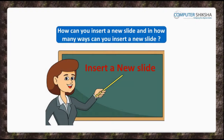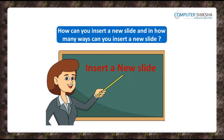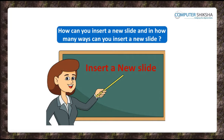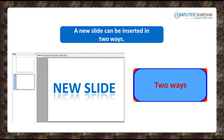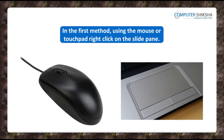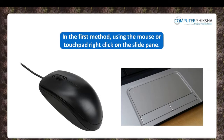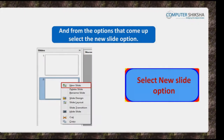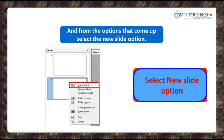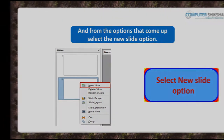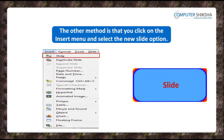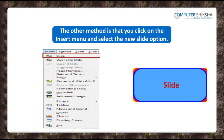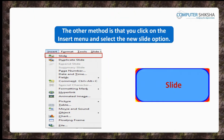How can you insert a new slide, and in how many ways can you insert a new slide? A new slide can be inserted in two ways. In the first method, using the mouse or touchpad, right click on the slide pane and from the options that come up, select the New Slide option. In the other method, click on the Insert menu and select the New Slide option.